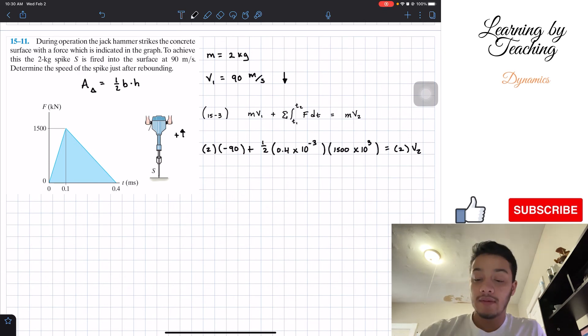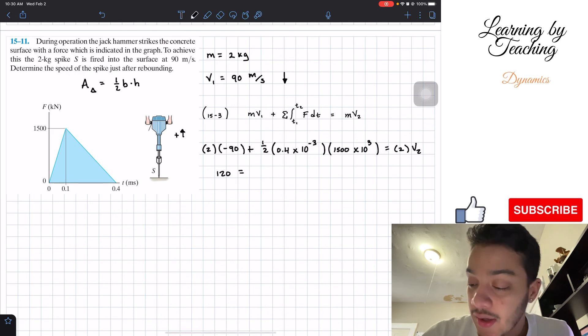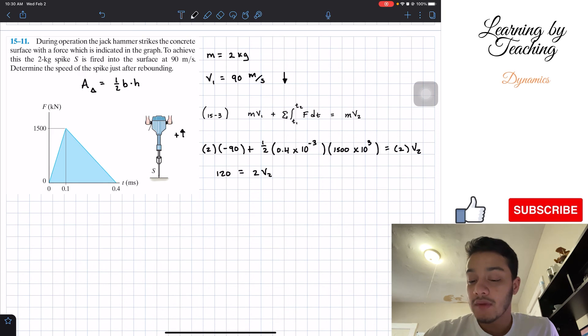And if we do that, we'll find out that this is equal, all of that is equal to 120. Our right side stays the same, 2 multiplied by V2. And if we finally solve for V2, this will give me a total of 60.